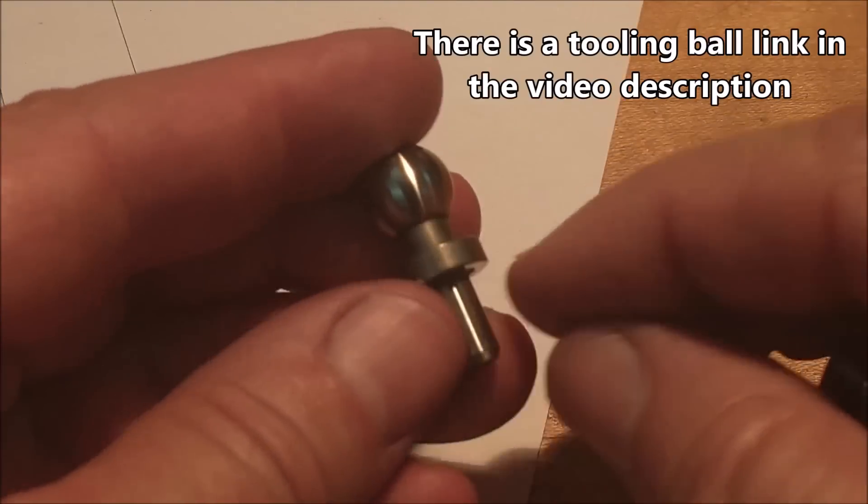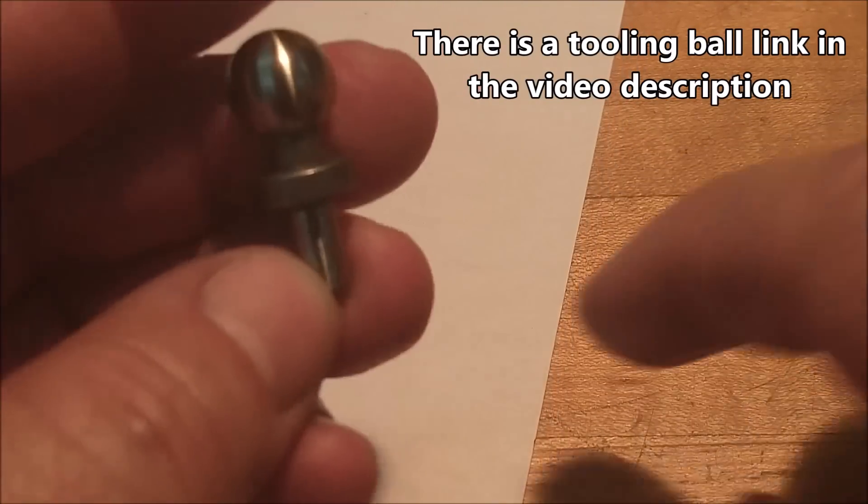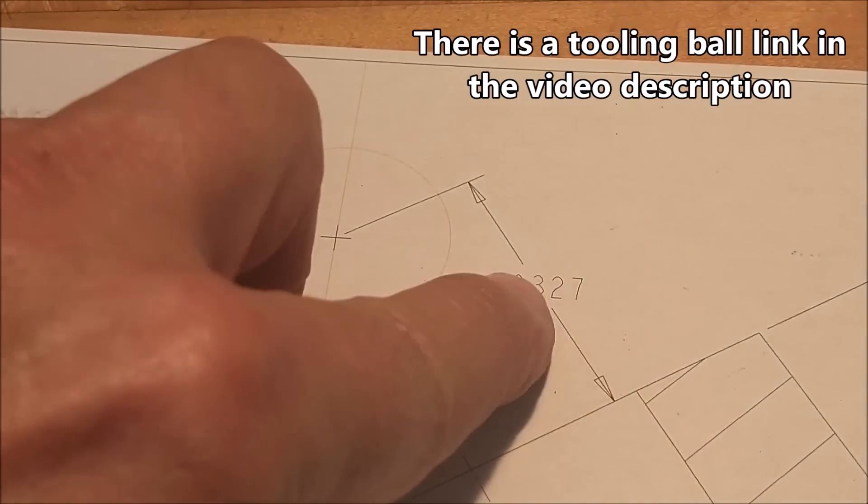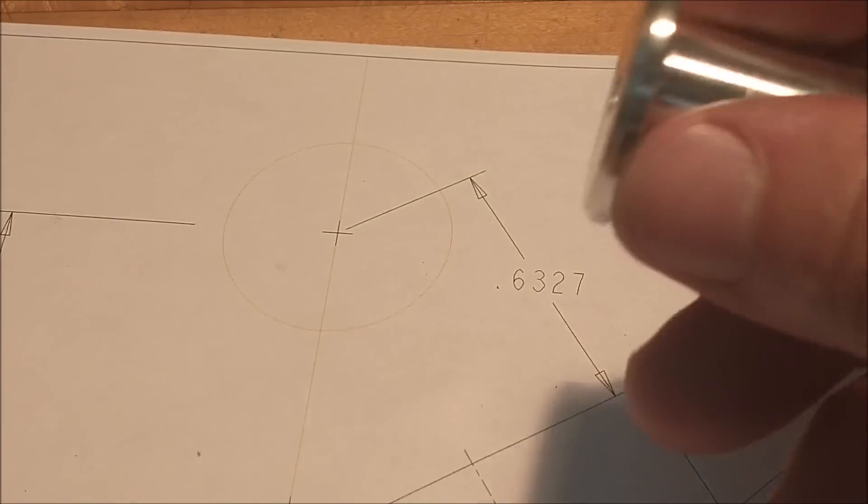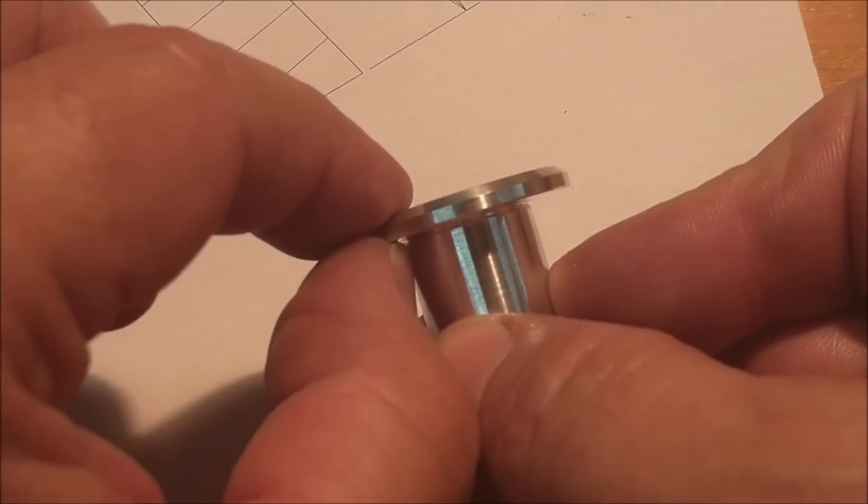I know that this ball is 500 from the center of the ball to this land right here. So if I take 500 off of this, it leaves me at 132, 133-ish. That's the thickness of this edge right here.